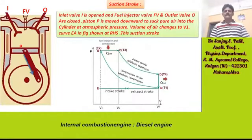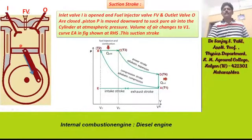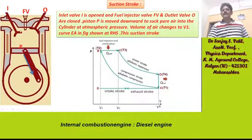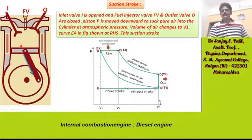Now we will discuss the suction stroke. In this suction stroke, the inlet valve is opened and the fuel injector valve FV as well as the outlet valve O are closed. The piston PE is moved downward to suck air into the cylinder at atmospheric pressure. Volume of air changes to V1, shown by curve EA in the figure on the right-hand side.